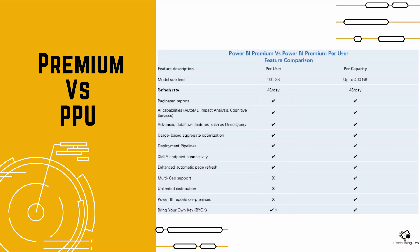Let's talk about features first. You should know that with Premium Per User you do not get multi-geo support, unlimited distribution, or Power BI reports on-premises. However, all other features are the same. Importantly, if you go with Power BI Premium Per User, then every single user in your organization must also have a Power BI Premium Per User license. Otherwise, they cannot access content shared through a PPU capacity.